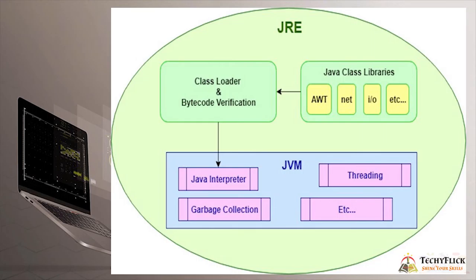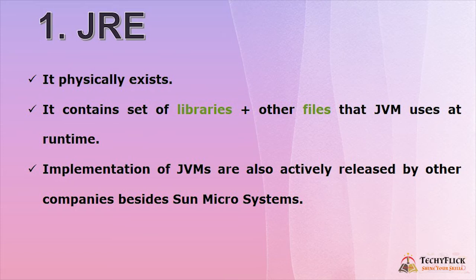Consider this diagram for JRE. First, Java class libraries like AWT, net, input-output, etc., are loaded into the class loader and bytecode verification. Within the JVM, there is a Java interpreter, threading, garbage collection — these are all parts of JVM. JRE physically exists and contains a set of libraries plus other files that JVM uses at runtime.